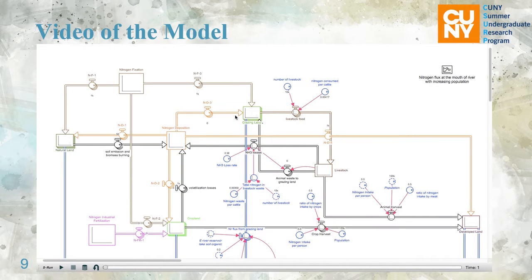With guidance from my mentors, we were able to create this initial model. This model is designed based on the earlier picture shown, except the animals only eat grasses and the destination is the mouth of the river. I'm using some data from the paper and also making assumptions where data are not available. Now we will see how the model works.